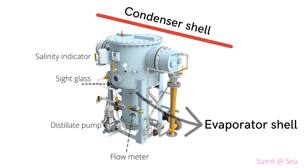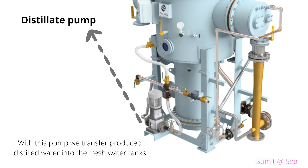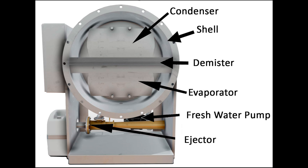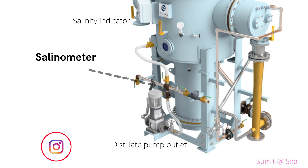Number three is the distillate pump, which transfers the produced fresh water to the fresh water tanks. Number four is the ejector pump — the ejector, driven by the ejector pump, creates vacuum inside the shell. Number five is the demister — a thickened layer of mesh structure fitted between the condenser and the evaporator element, used to separate seawater droplets from the steam vapors.